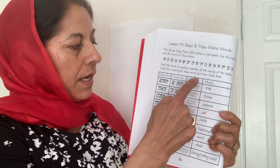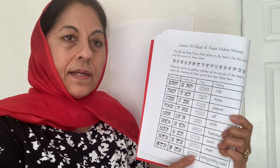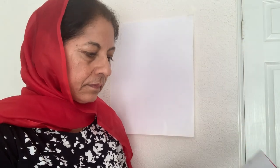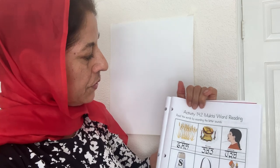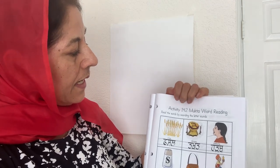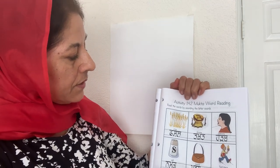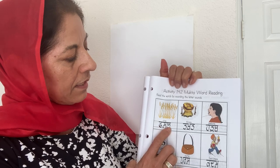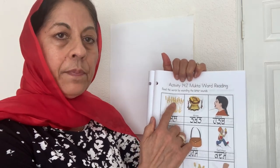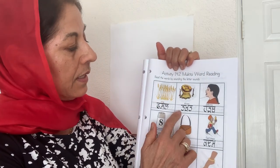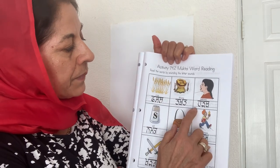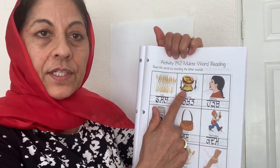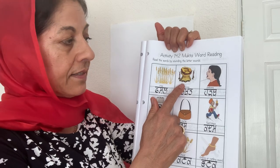Pause the video and go ahead and write the words. On the next page, activity 14.2, we will read the words and sound out the letters. Fasal is crop — many plants of the same kind. Takat is a throne; this is a takat from Maharaja Ranjeet Singh, so it's historical.